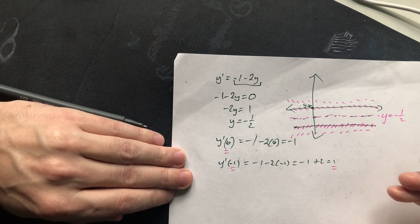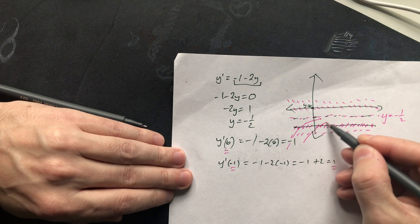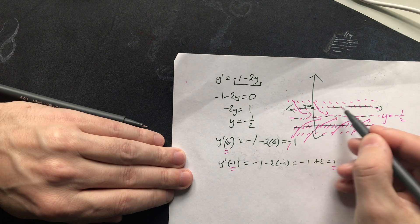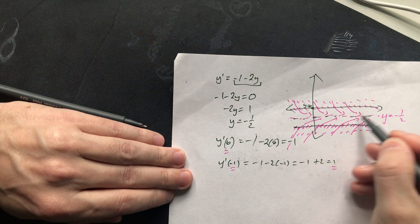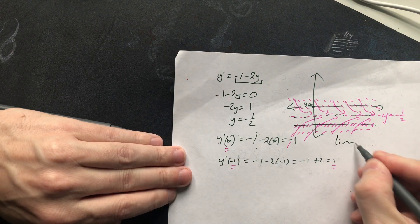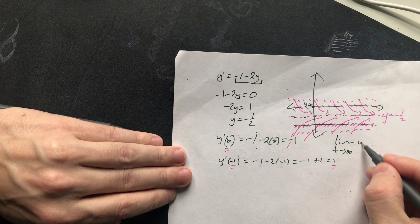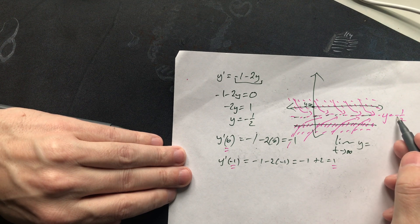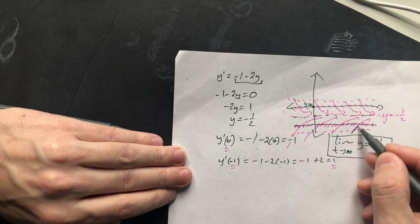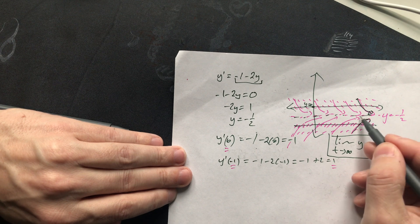In other words, what happens is that if this is a particular solution here, it kind of tends towards y equals negative 1 half. And the same thing over here, it tends to y equals negative 1 half like that. So we could write down a basic limit statement. The limit as t goes towards positive infinity in this case of y, that would be equal to negative 1 half. We can conclude that from the fact that these right here from below and from above tend towards negative 1 half.